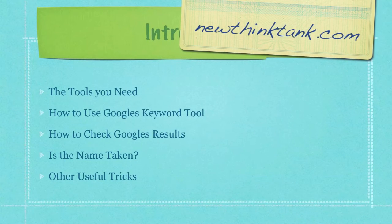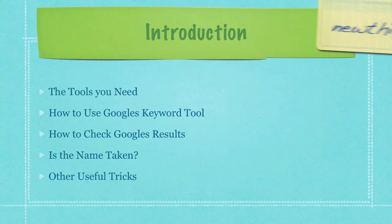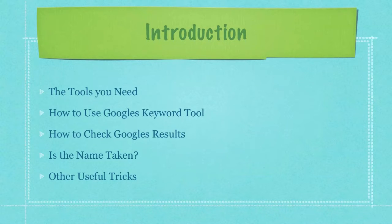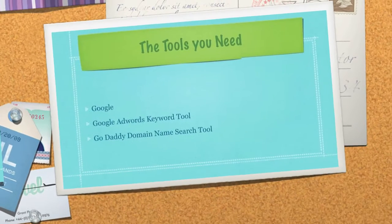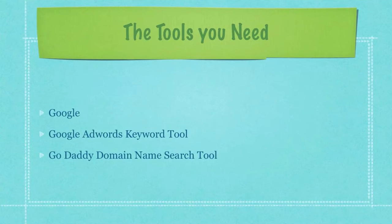I'm going to show you how to use the Google Keyword tool to find good keywords that you're then going to use in your domain name. I'm going to show you how to double-check Google's results to make sure that they are accurate. Then I'm going to show you how to check to see that the name's not already taken, and a bunch of other useful tricks here at the end. The tools that you will need: you'll need Google, you'll need the Google AdWords Keyword tool, and you'll need the GoDaddy domain name search tool.